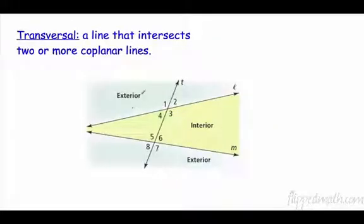A transversal is a line that intersects two or more coplanar lines. So I have a line here and a line here. My transversal cuts it right through the middle. It cuts through both lines. And as you can see, if you have two lines, you have an outside and exterior, and you have what's between the two lines, also known as the interior. And this line that cuts through them both is called the transversal.